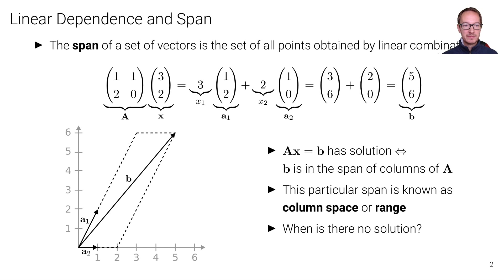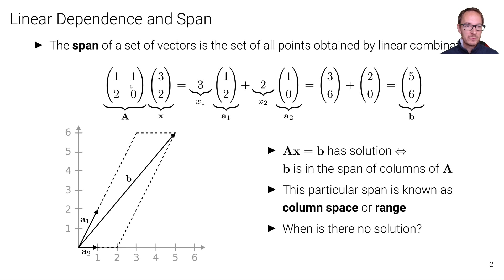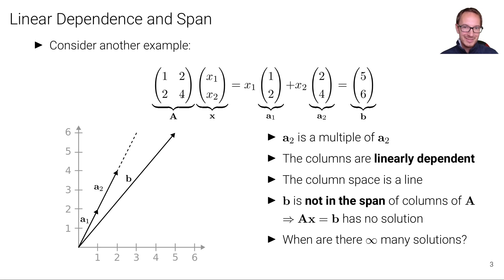This is the situation when we have exactly one solution. Now what is the situation when we have no solution? Consider this matrix A with elements 1, 2 and 2, 4. We can see that the second column (2, 4) is a multiple of the first column (1, 2) — two times the first column equals the second column. In other words, these two vectors are linearly dependent; we can find a scalar to transform one into the other.